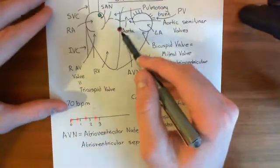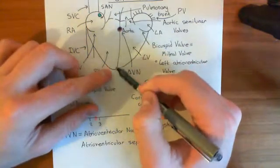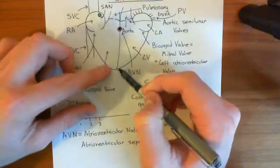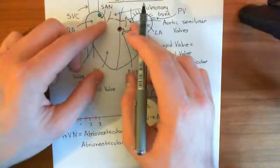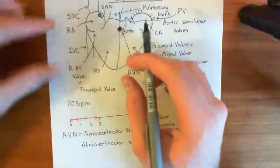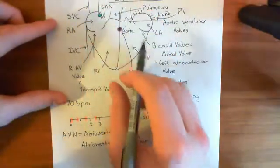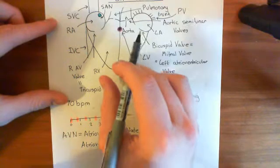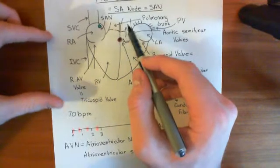Instead, what you need to do is take the action potential down to the bottom through conducting fibres, and then release it on the normal contractile cardiomyocytes once you've got to the bottom, so that it can propagate from the bottom upwards. The cardiomyocytes at the bottom will contract first, followed by the ones above, and instead of pushing blood down to the base of the heart, the blood gets ejected up into either the pulmonary trunk or the aorta.